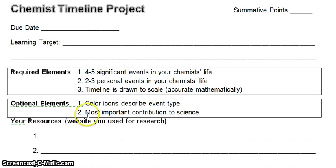Your optional element — and there will always be one option to choose on projects — is to color in or make icons that describe what type of event it is. For instance, is it an educational event, a discovery, or an award? The icons you choose will depend on which chemist you have and what you think is important in their life. Alternatively, you could choose what you think is their most important contribution and star it, highlight it, or make it more visible in some way.